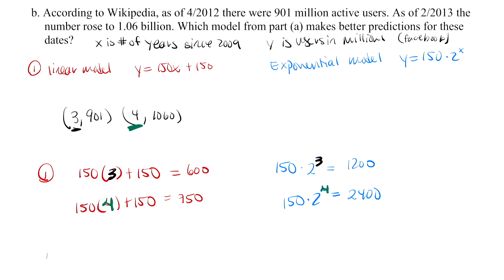Which is approximately the best model? Well, I'm not really going to say best or worse. What I am going to say is this one is an underestimate. It underestimated 901 and it also underestimated 1060. So the linear model underestimates actual Facebook users. Now what about the exponential model? The exponential model seems to overestimate the number of Facebook users.